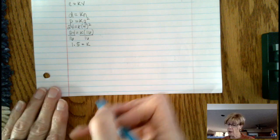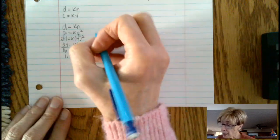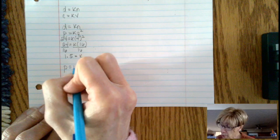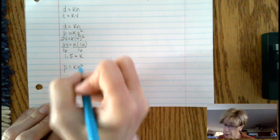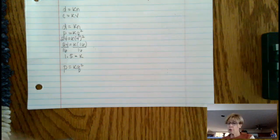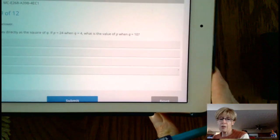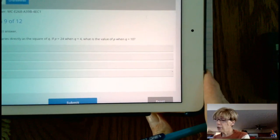But now that we know 1.5, we need to go back to the formula p equals k q squared. The problem says, what is the value of p when q equals 10?